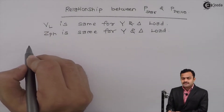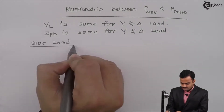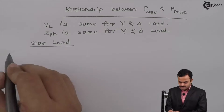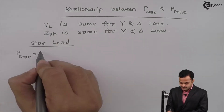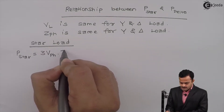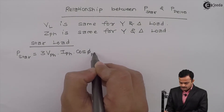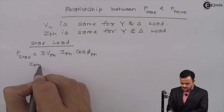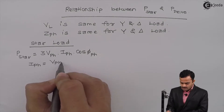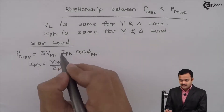First I will consider a star connected load. The power expression is: P_star is nothing but 3 × V_PH × I_PH × cos(φ_PH). Here, I_PH is nothing but V_PH divided by Z_PH. So if I substitute this, I will get P_star as...